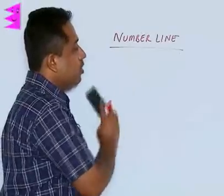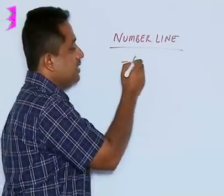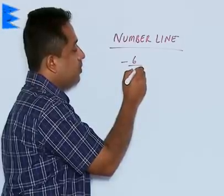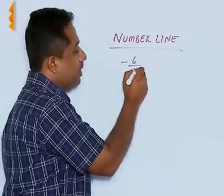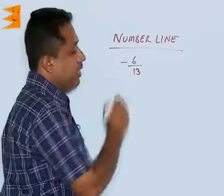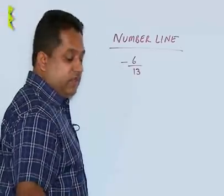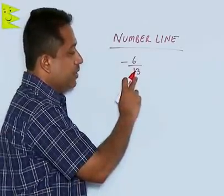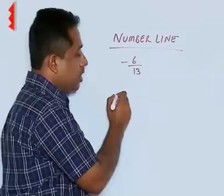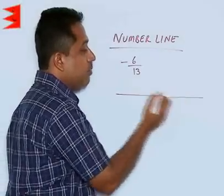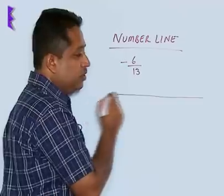Let us say we want to plot minus 6 by, let us say, 13. Now, in this case we find that again it is a negative number and we have to divide now into 13 equal parts because the denominator is 13.